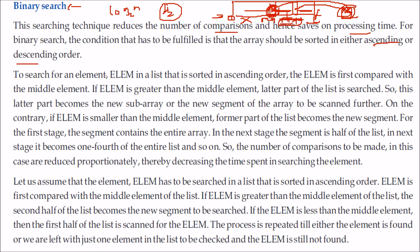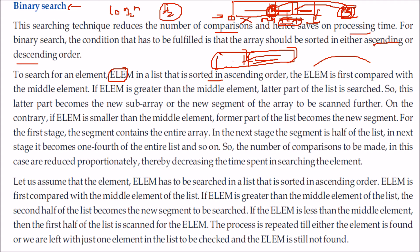Ascending or descending order is the must condition. The element is first compared with the middle element. If the element is greater than the middle element, the latter part is searched as the new sub-array. If the element is smaller, the former part is searched. The number of comparisons is reduced proportionately — log n is hugely less than n. If you have n items, you only compare log base 2 of n items, so the time is very less.